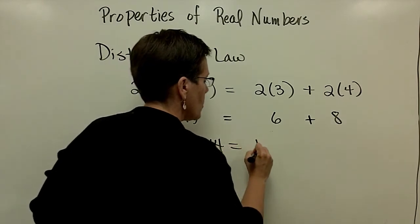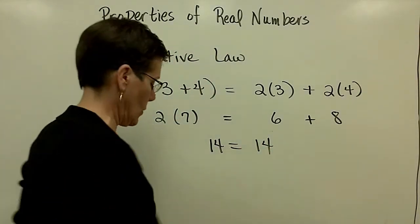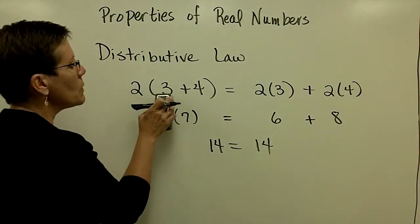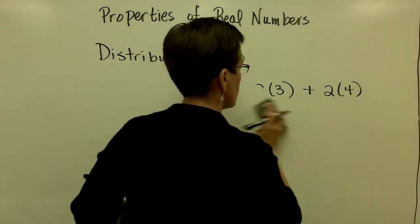Either way, you get 14 as a result for this problem. Where we're going to use this, an example of where we're going to use the distributive law is we won't have arithmetically just a 3 and a 4 in those parentheses. We're going to have variables involved.